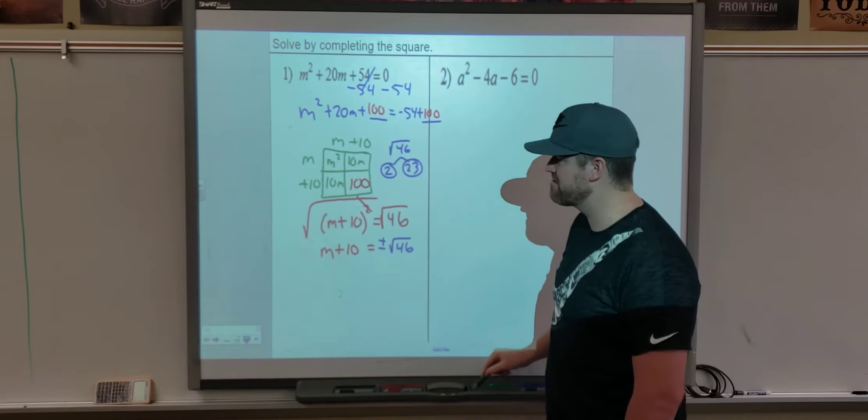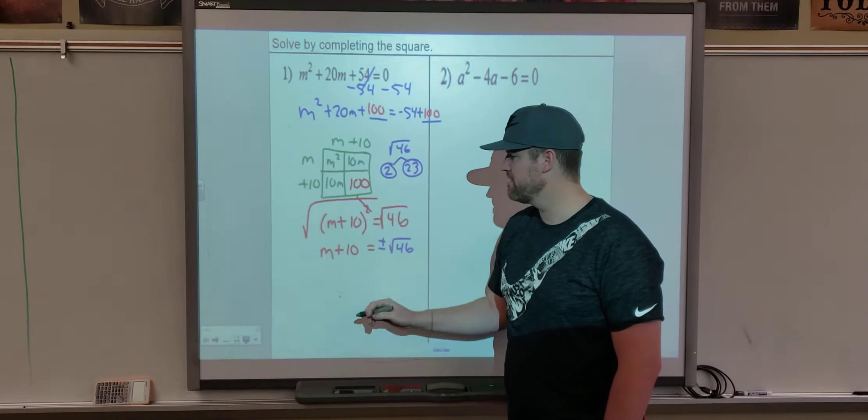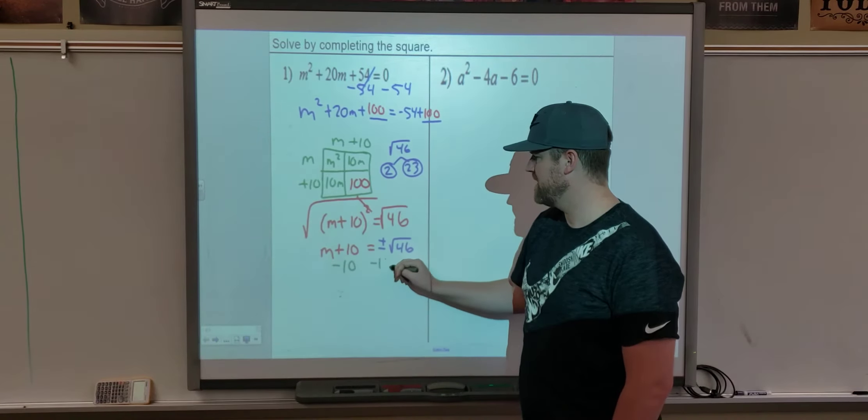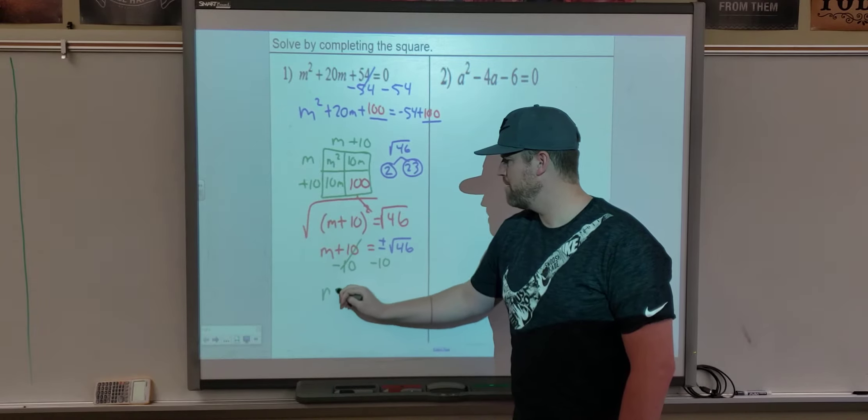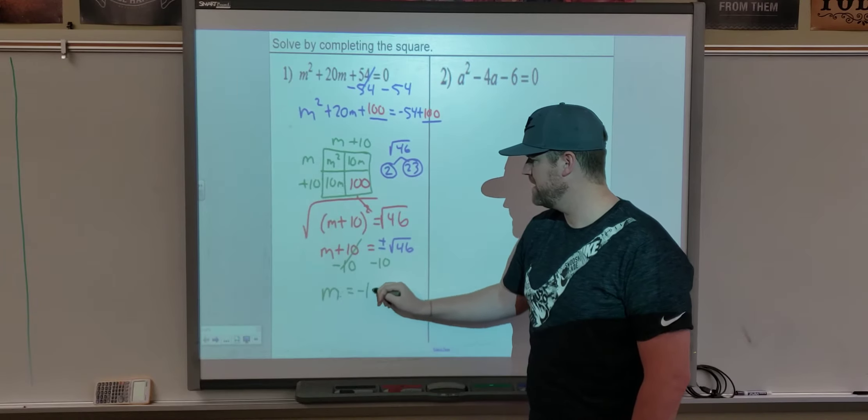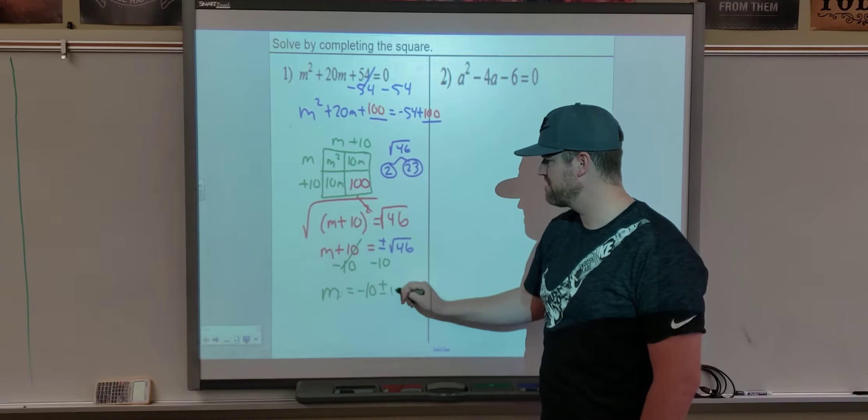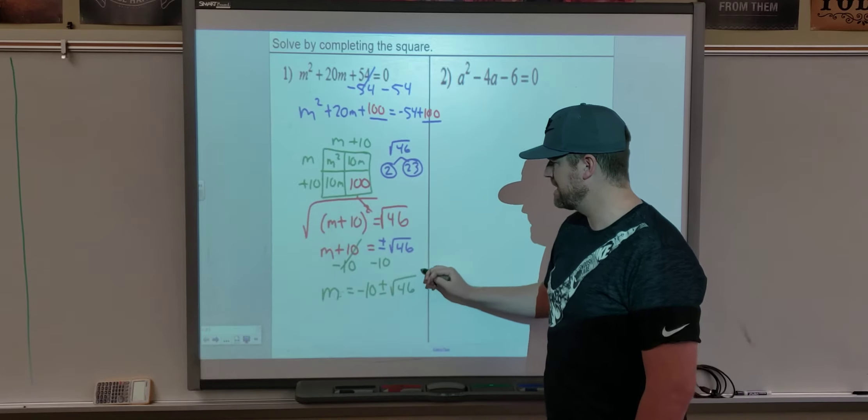Finally, to finish solving it, we want the m by itself. So subtract 10, subtract 10, and we get m equals negative 10 plus or minus square root of 46.